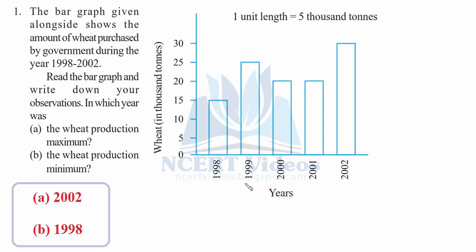In this bar graph, one unit length is equal to 5,000 tons. In 1998 we had 15,000 tons of production, 1999 had 25,000 tons, similarly for 2000 and 2001 we had 20,000 tons, and in 2002 we had 30,000 tons. The wheat production maximum is clearly 30,000 tons for the year 2002, which has the highest bar.